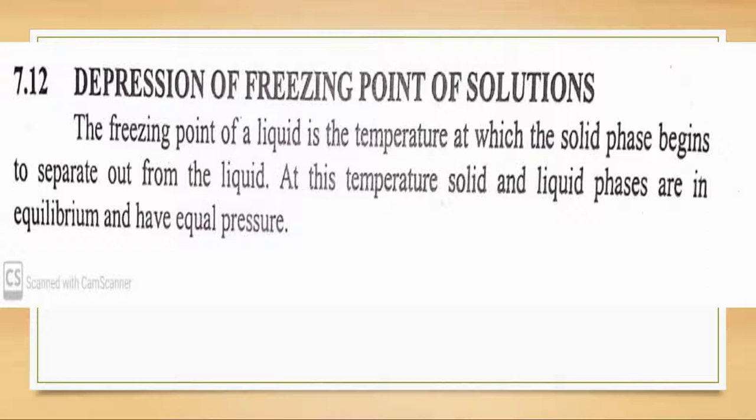You take three samples, each with one kilogram of water added. In the first sample, you add 60 grams of urea. In the second, 180 grams of glucose. In the third, 342 grams of sucrose.